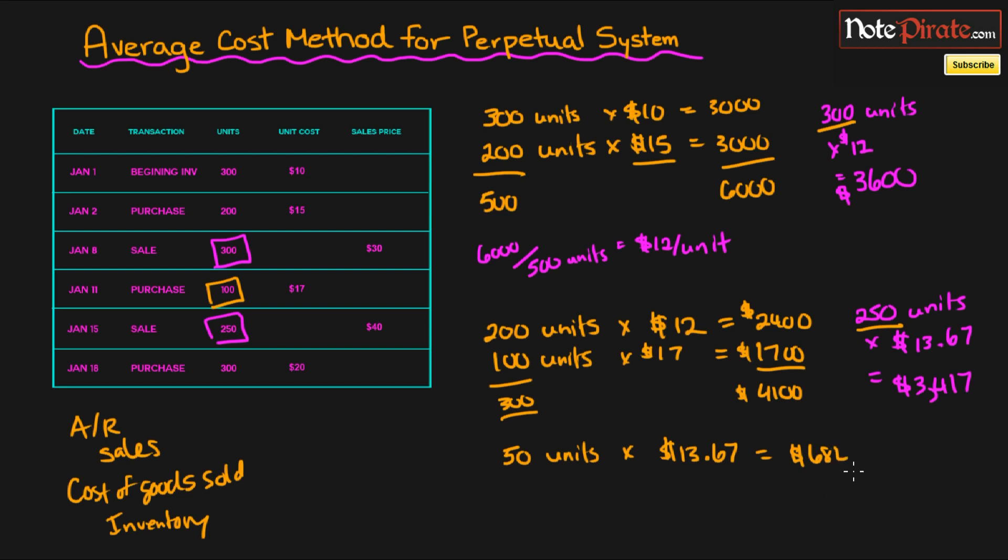And we make a purchase of 300 units at $20, which is going to be $6,000 of new inventory. And our total inventory worth is now $6,684 and we have 350 units. So what this ending number right here is going to be, this is going to be our ending inventory. Because that's all we have left, and that is the value of the 350 units that we have remaining.